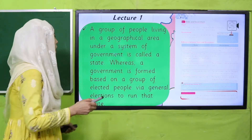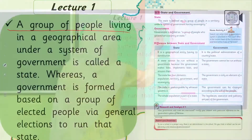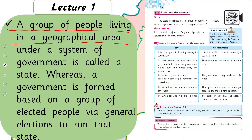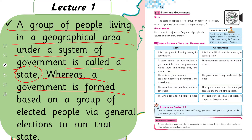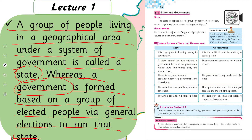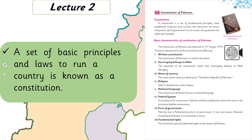In lecture number one, we discussed that a group of people living in a geographical area under a system of government is called a state. A government is formed based on a group of elected people via general election to run the state.